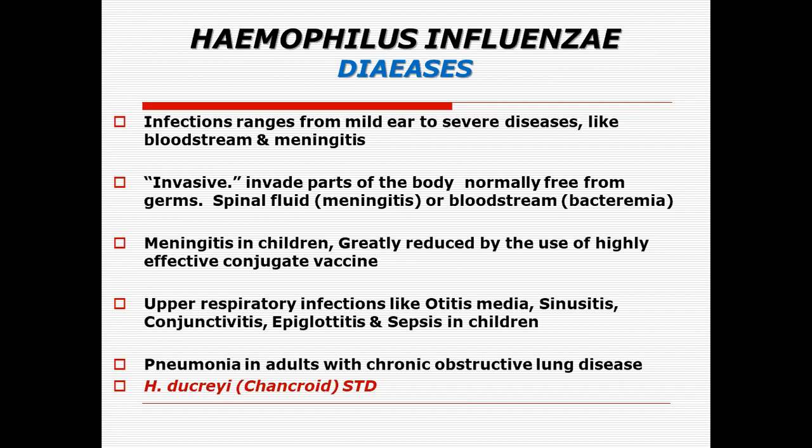Haemophilus ducreyi causes chancroid, which is a sexually transmissible disease. It needs to be differentiated from the other chancre-like lesion called by Treponema pallidum. Haemophilus ducreyi causes a soft chancre — a non-indurated soft ulcer — whereas Treponema pallidum causes a hard chancre that causes syphilis. So you will find soft chancre in case of Haemophilus ducreyi and hard chancre in case of Treponema pallidum, respectively.